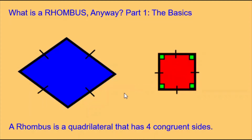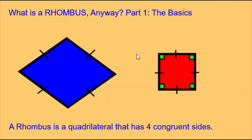You can also ask: is a rhombus a square? And of course, the answer is not necessarily. A rhombus has four congruent sides, which is necessary to be a square, but a rhombus does not have to have any internal 90-degree angles. At least one internal 90-degree angle is necessary for a shape to be a square. So most rhombuses are not squares, but all squares are rhombuses.